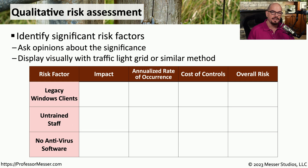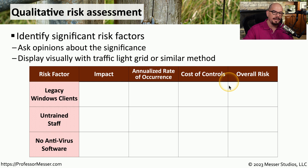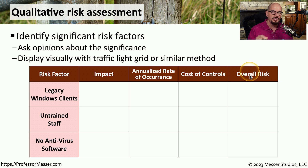Determining levels of risk can vary widely on how many different variables are involved. One way to evaluate risk may be to create a qualitative risk assessment. This type of evaluation will look at individual risk factors and the different criteria for each one. You can often display a qualitative risk assessment in very broad terms. In our particular case, we're going to use a traffic light grid to show a low, medium, or high risk in each of these categories.